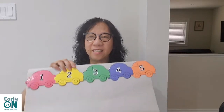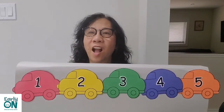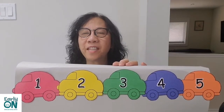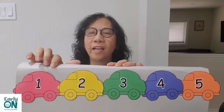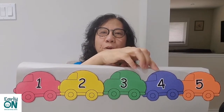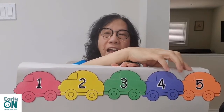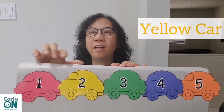And now let's look over at this row. What do you see? Oh, I see cars on the road! Let's count how many cars on the road: 1, 2, 3, 4, 5. Five cars!